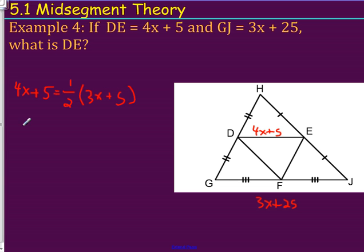From here, we could solve. So, we have 4X plus 5 equals, well, we have to distribute that one half. So, it'll become 3 halves X plus 5 halves. And we can go from there.